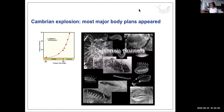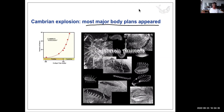When did all these organisms arise on Earth? There's a time period called the Cambrian Explosion. Fossils found worldwide show that most major body plans — radial and bilateral — appeared within a span of about 10 million years.